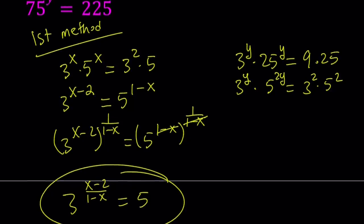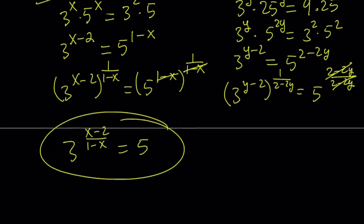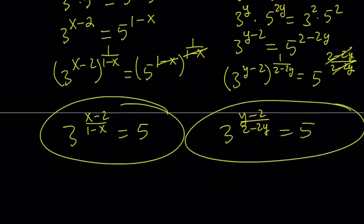So here we're going to do the same thing. Let's put all the threes on one side. So divide by 3 to the second and right hand side divide by 5 to the power 2y. So that becomes 5 to the power 2 minus 2y. And then we're going to be raising both sides to the power of something so that we can isolate the 5. And that will be 1 over 2 minus 2y. From here, 3 to the power y minus 2 over 2 minus 2y equals 5. We got the 5 twice.